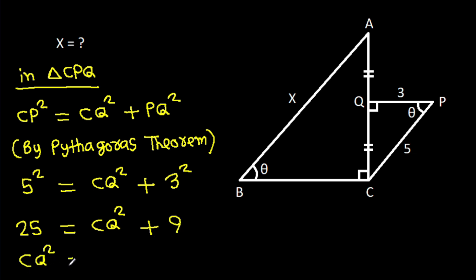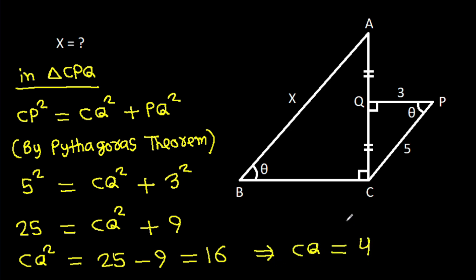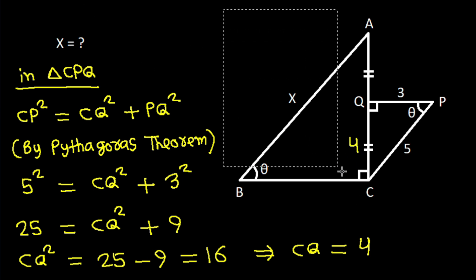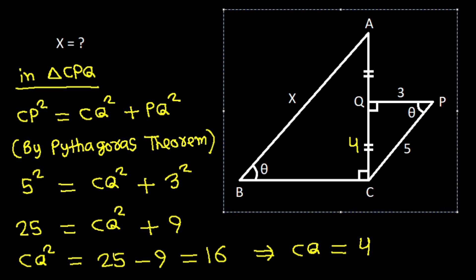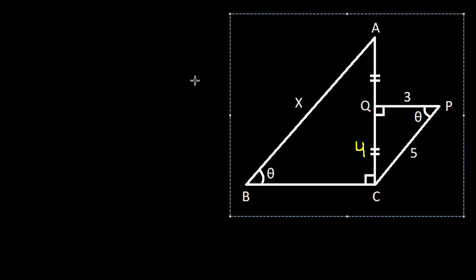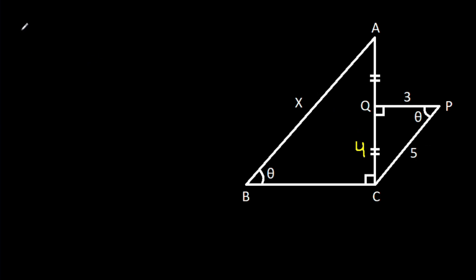So CQ squared will be 25 minus 9, that will be 16. That means CQ will be 4.